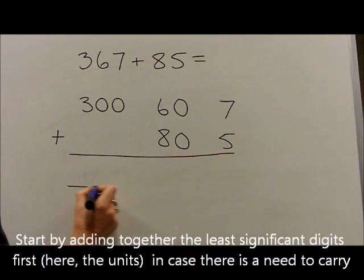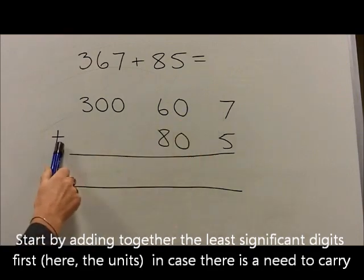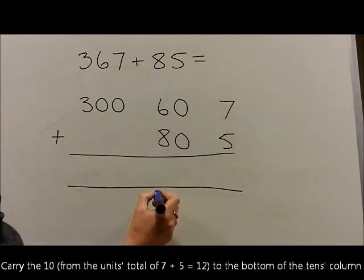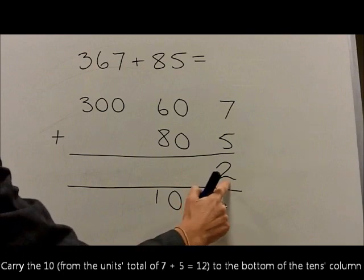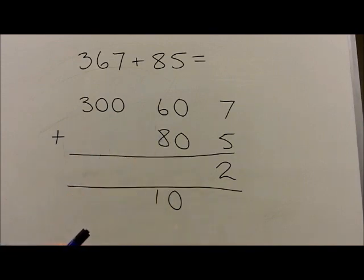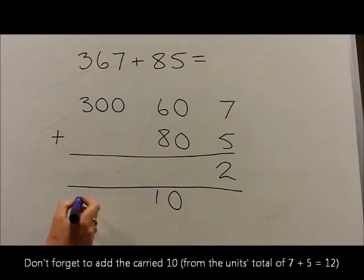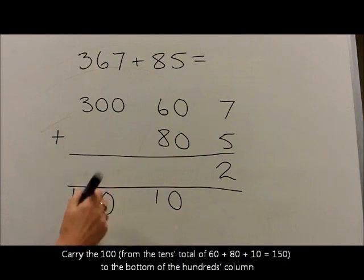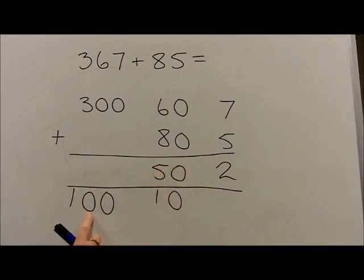We then start adding, starting again with the units in case we need to carry. We start with 7 plus 5, which is 12. That is written as 10 in the 10s column and 2 units, giving us 12 altogether. We then add our 6 10s — 60 — to our 8 10s — 80 — which is 14 10s, 140. Plus another 10 is 15 10s, which is 150. We write that as 100 carried into the 100s column and the 5 10s, which are 50, giving a total of 150.